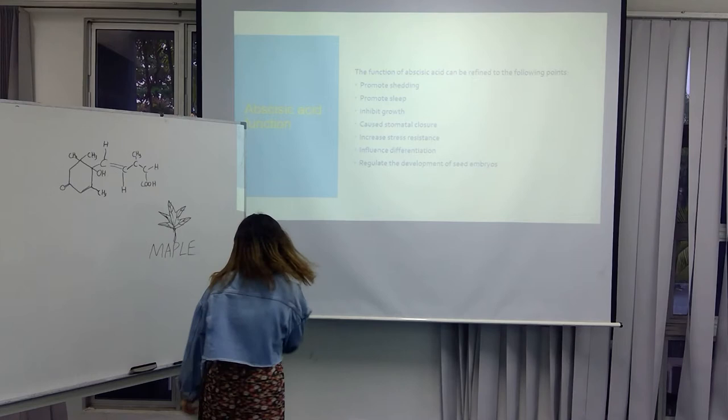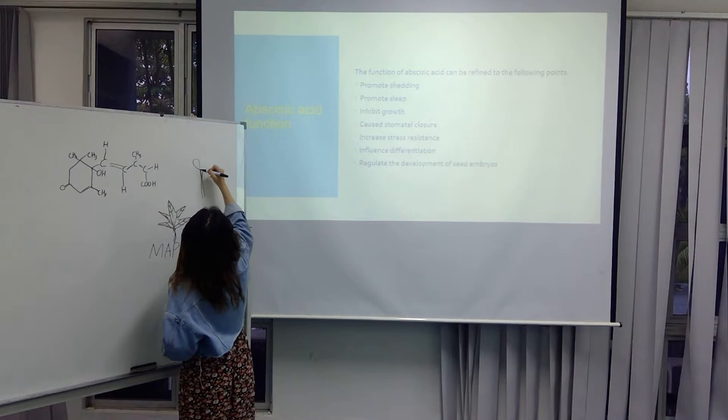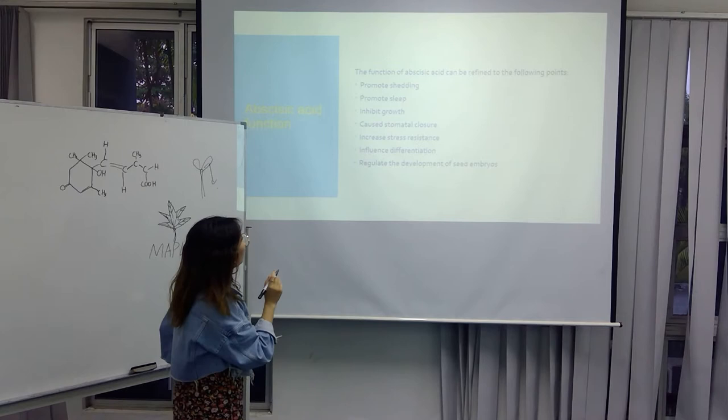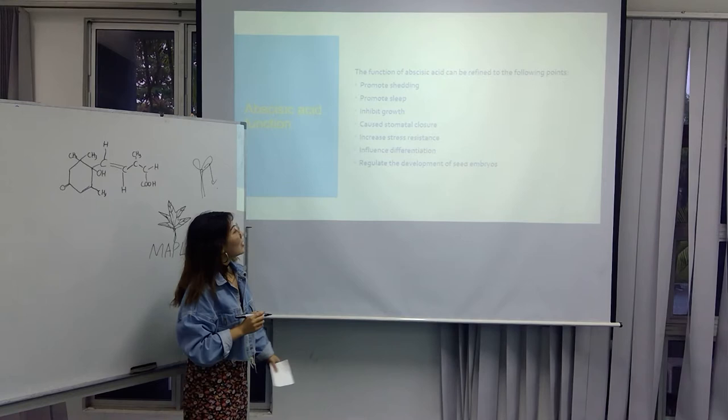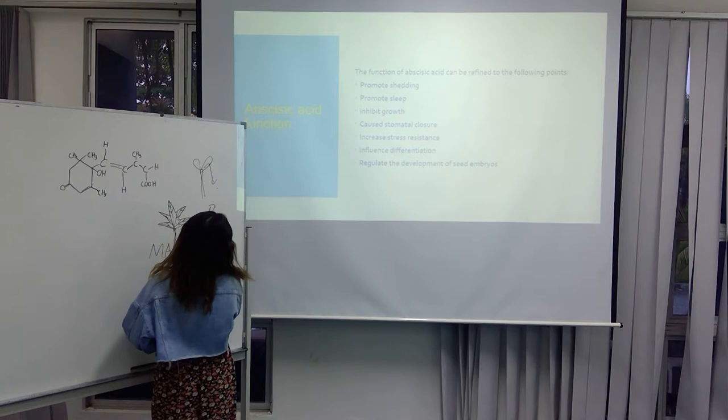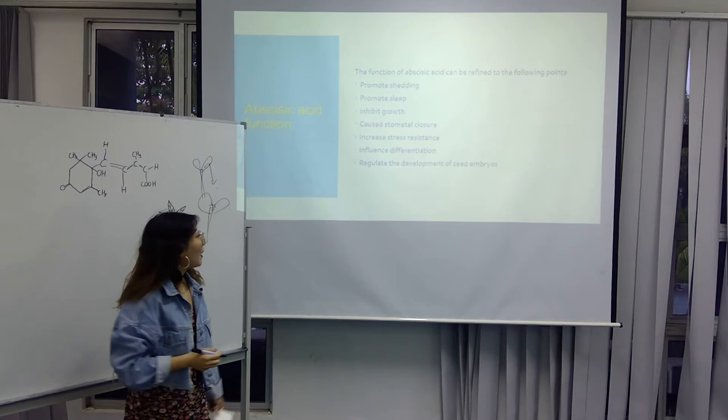The first one is to promote shedding, to promote the leaves to fall out. The second one is promote seed dormancy. And the third one is inhibit growth. We can stop the leaf growth.